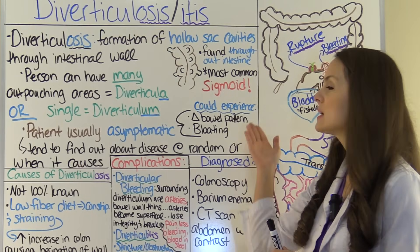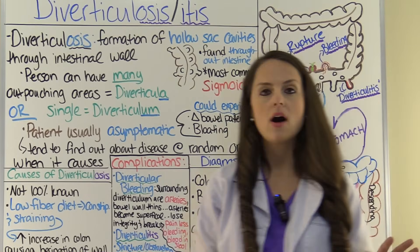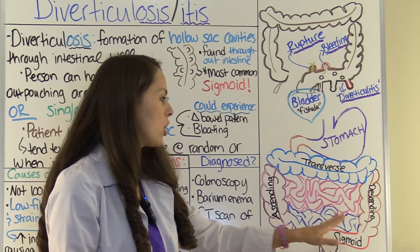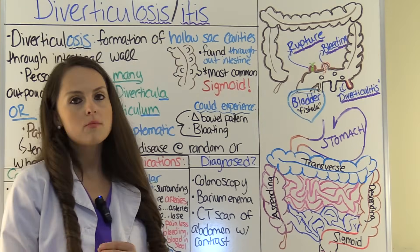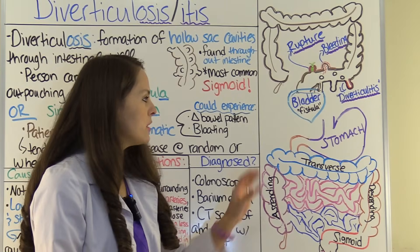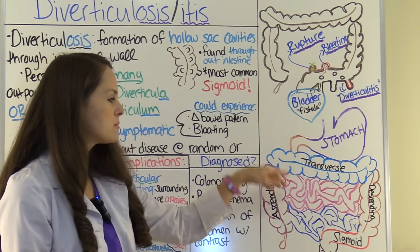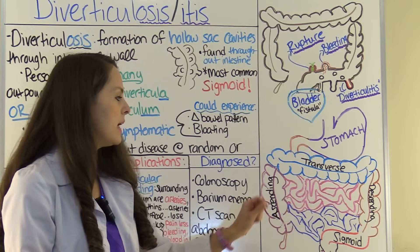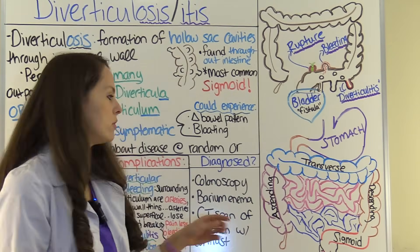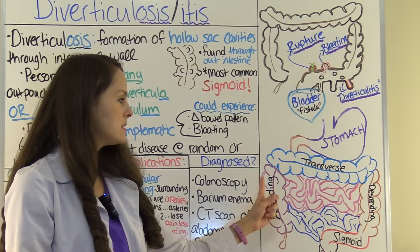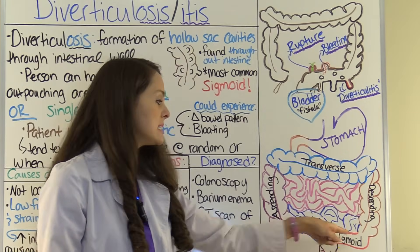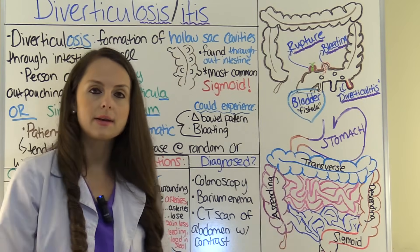A person can have these anywhere throughout the intestine, but they tend to be most common in the sigmoid colon. To recap anatomy and physiology: you have your stomach, then the small intestine, then the large intestine, which is referred to as your colon and rectum. You have the ascending colon, transverse colon, descending, sigmoid, and then the rectum.